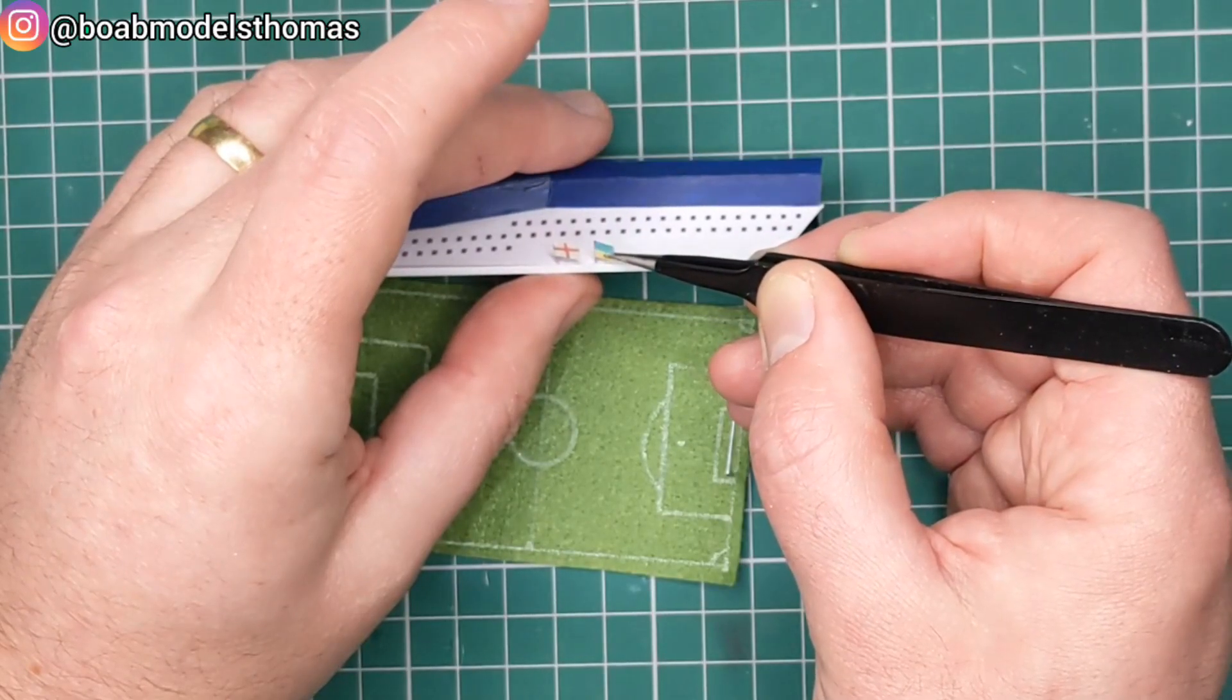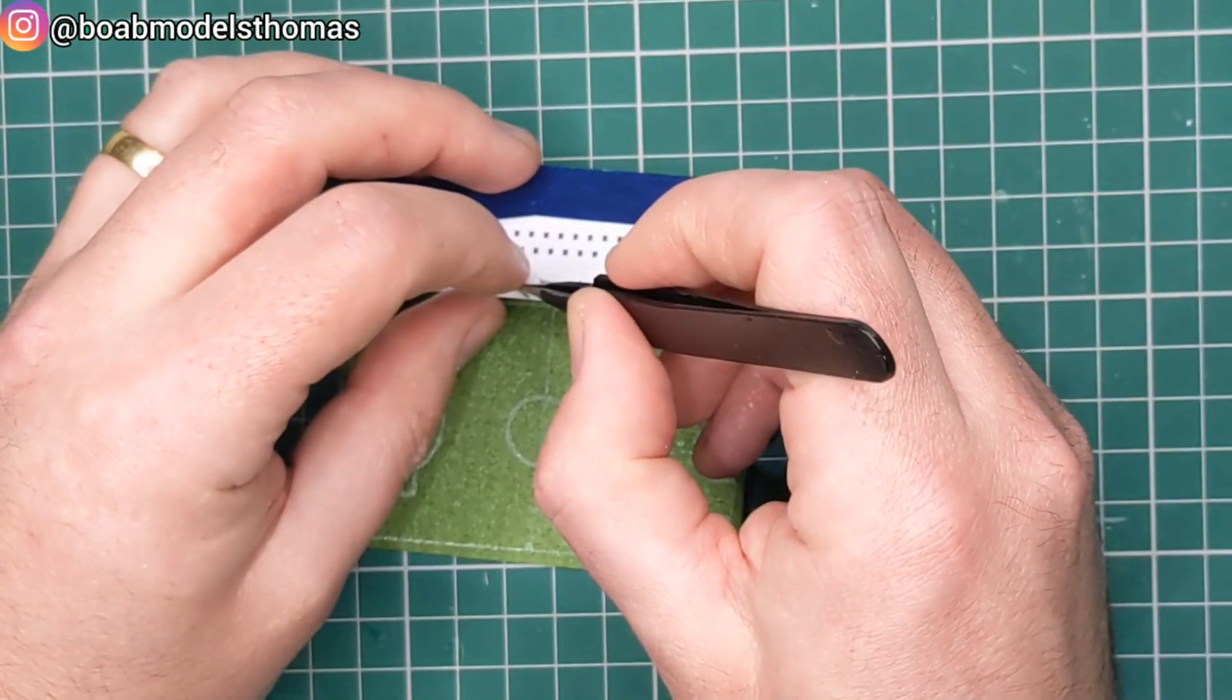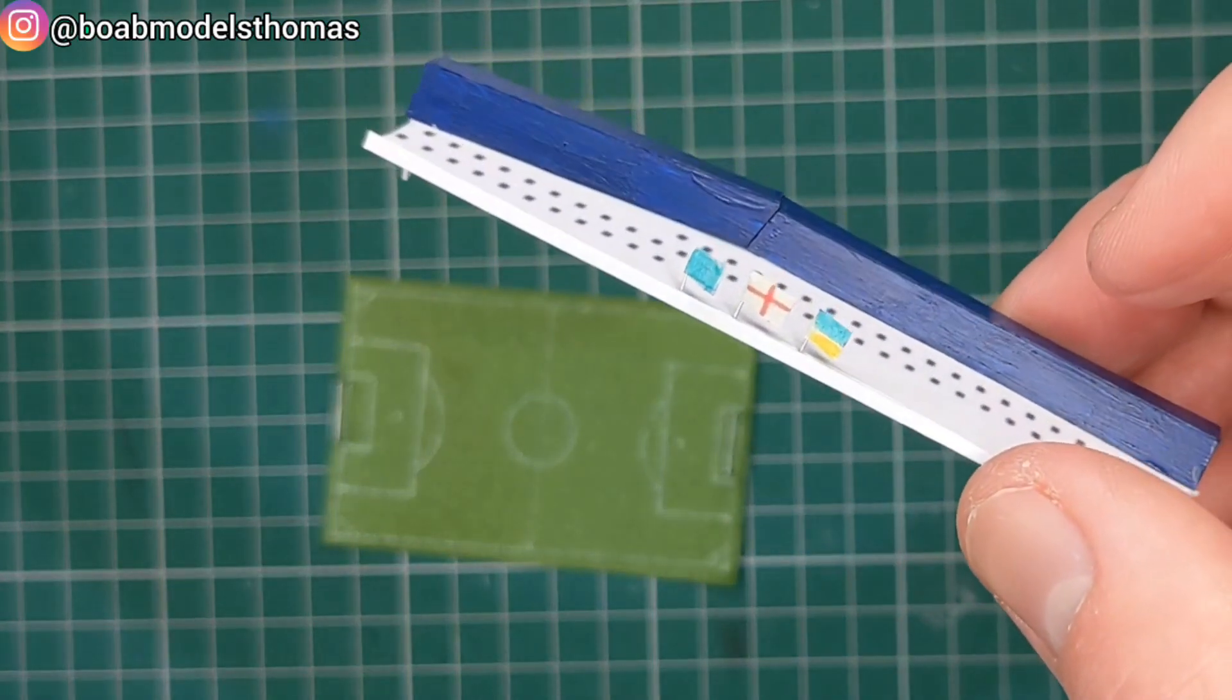And here I'm using a bit more of the florist's wire, with some masking tape, to do some little flags. There's usually five on this stand, but I thought I'd just do three. England, Ukraine and Portsmouth, for my own family.